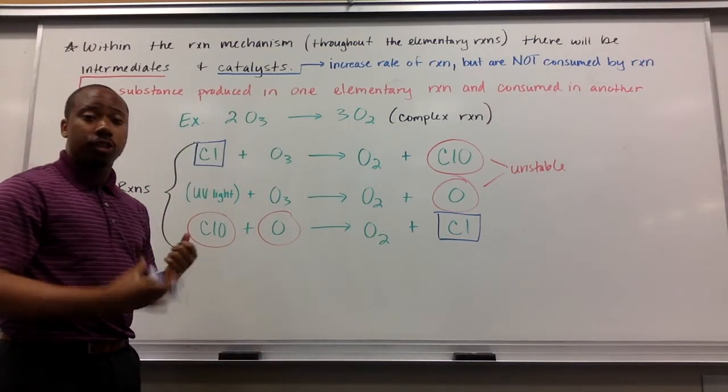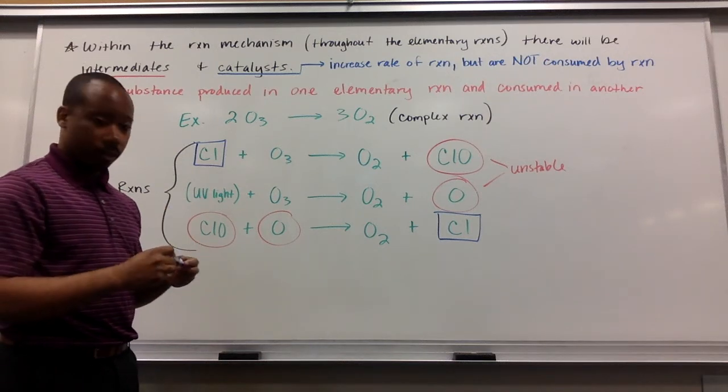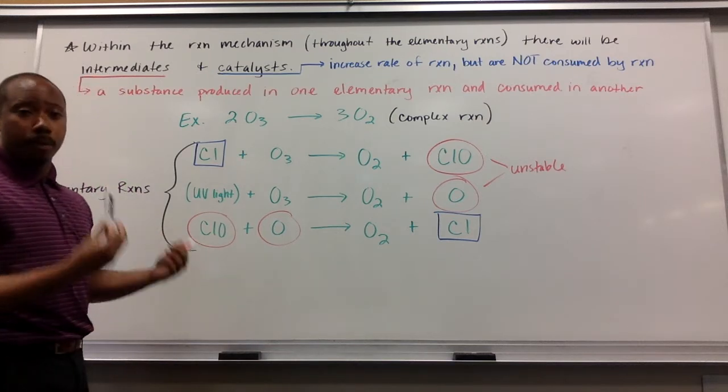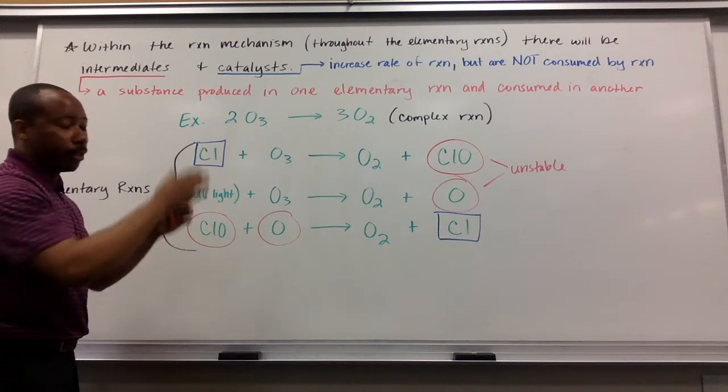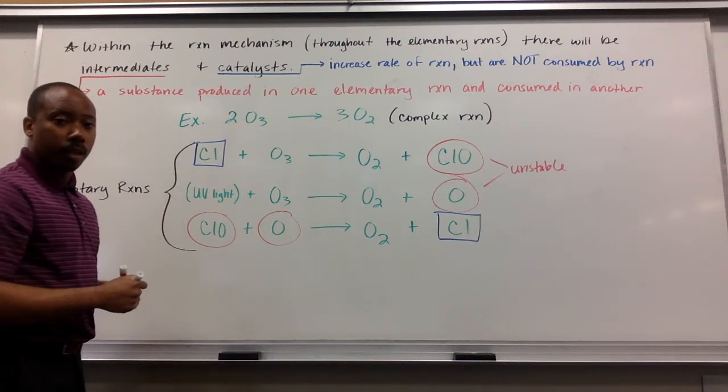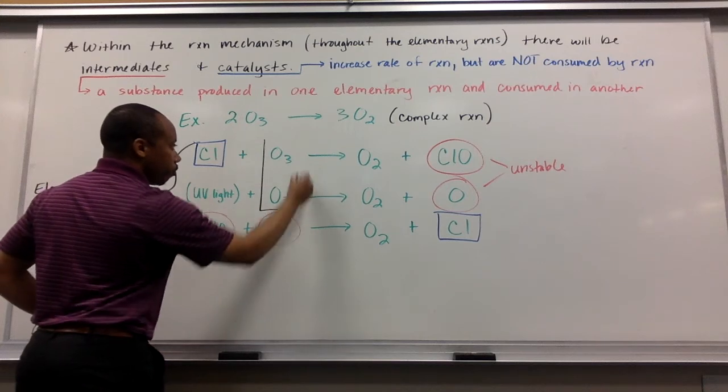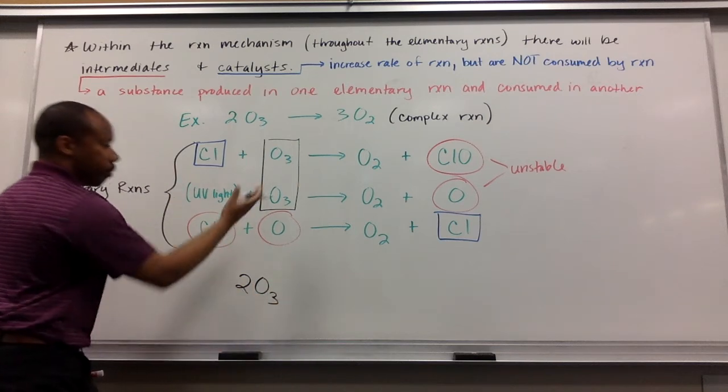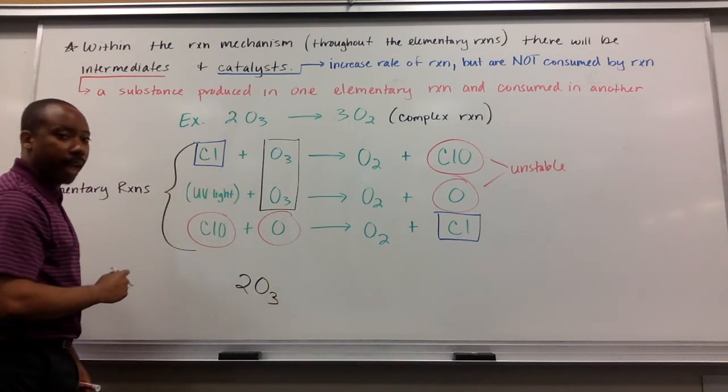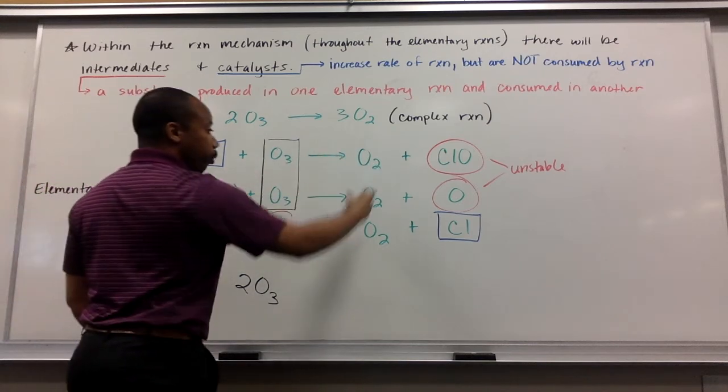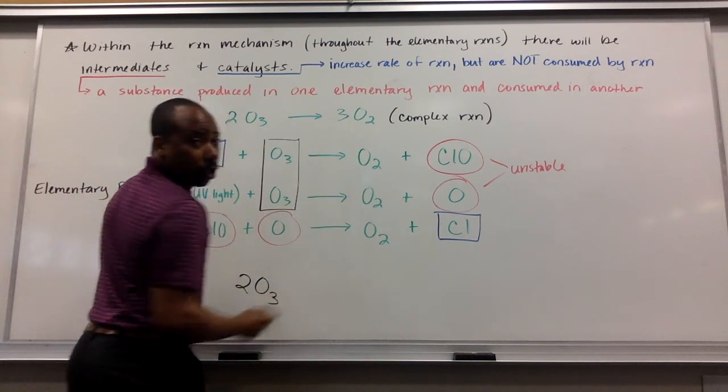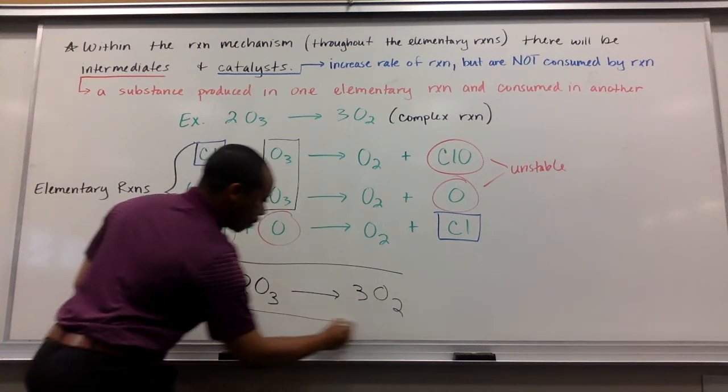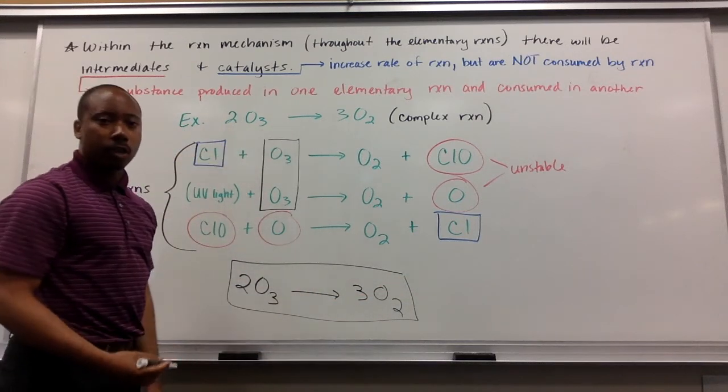Intermediates and catalysts do not appear in our overall complex reaction. So, we can use a Hess's law approach and looking at these three elementary reactions. Overall, we have two moles of O3 left over on my reactant side, discounting the UV light. It's not a reactant. And produced, we have three moles of O2. And that matches my complex reaction that I started with.